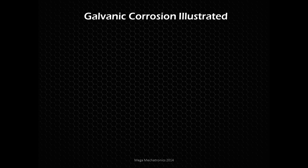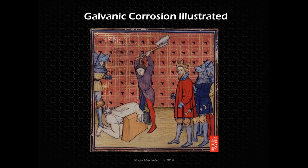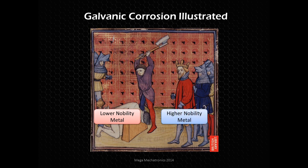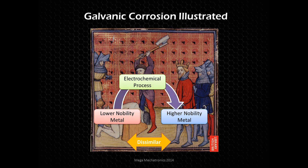To illustrate the process in a fun way, let's go back to medieval times. The guy on the chopping block is a low-nobility metal, and the king over here is a high-nobility metal. There is a dissimilarity between them, and the axman is the electrochemical process. The higher nobility starts taking ions from the lower-nobility metal, creating different molecules and degrading that lower-nobility metal.